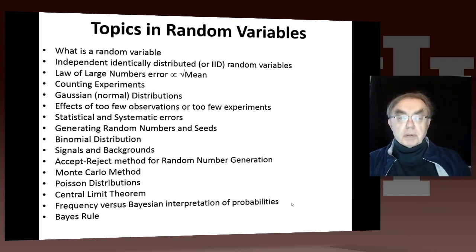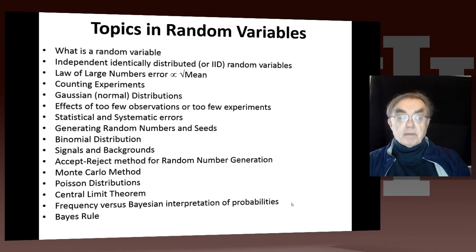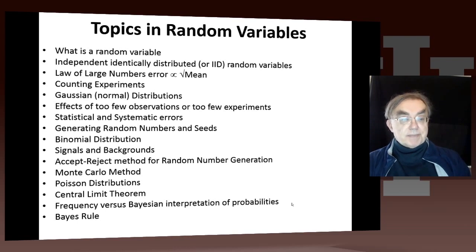You have important consequences of either having too few observations or too few experiments — that's the statistical error side of things. We also have the systematic error or bias, which is in practice more important, because we know what to do with statistics — we just run longer. If we've got the wrong answer, it's not so obvious what to do. So that's a systematic error, but we have to estimate both.